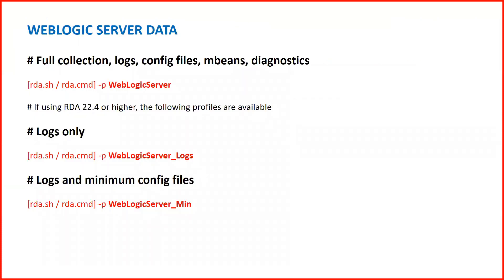To collect the full collection of logs, configurations, MBeans, and all diagnostic data — a complete snapshot of your domain — run the command: rda.sh or rda.cmd -p WebLogic_Server. There are three profiles: WebLogic_Server for the full snapshot, WebLogic_Server_logs if you only want to collect logs, and WebLogic_Server_min for configuration files only.